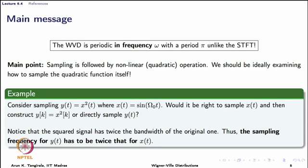In the example, we have a signal x, and a transformed version called y, where the transform is quadratic — making this example more consistent with what we do in Wigner-Ville. For the purpose of discussion, assume that the signal x is a sine wave. So what I am doing is taking a sine wave and squaring it. The question at hand is whether it is right to sample x(t) and then construct the transform, or to directly sample the transform itself. That is exactly the question we also have in Wigner-Ville: should I decide the sampling for Wigner-Ville based on the sampling of the signal, or based on the Wigner-Ville distribution itself?